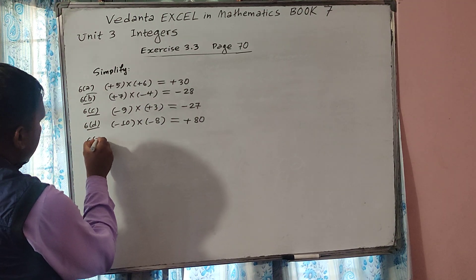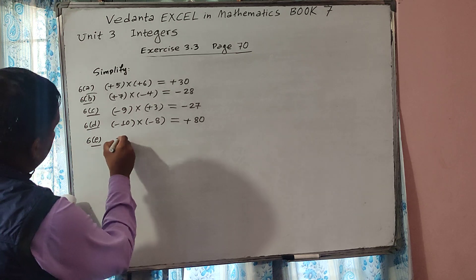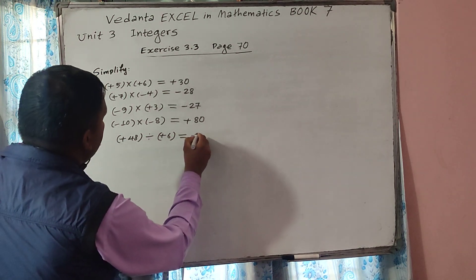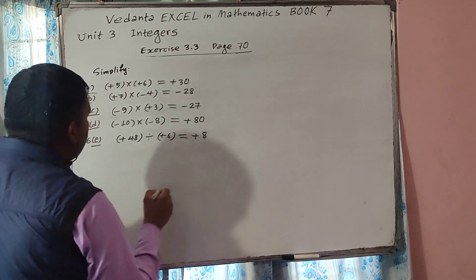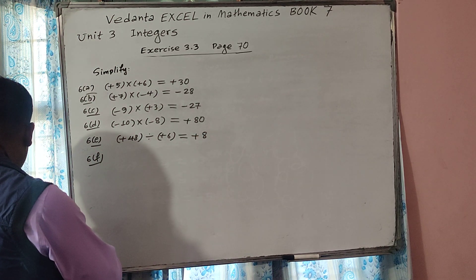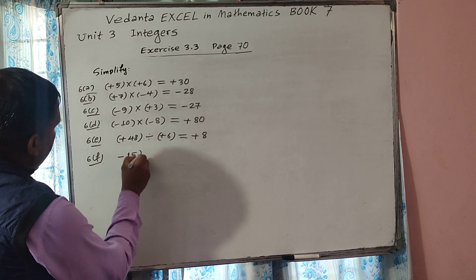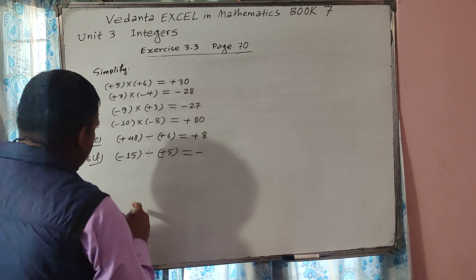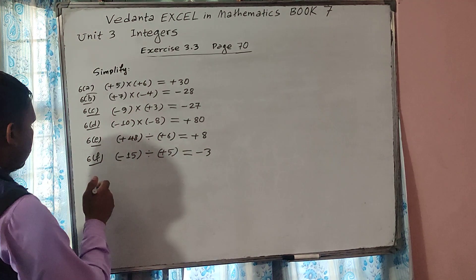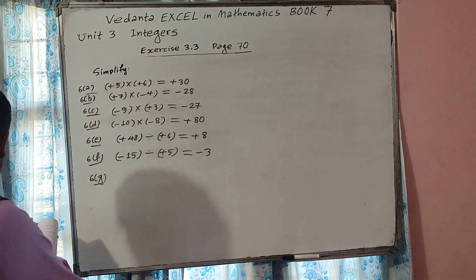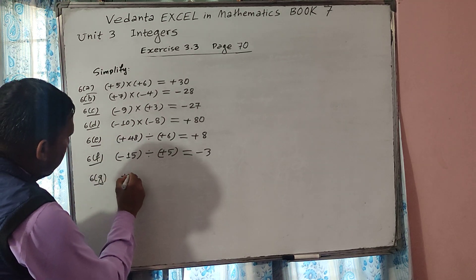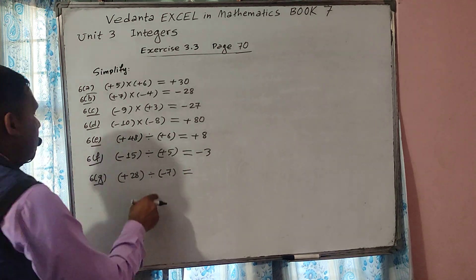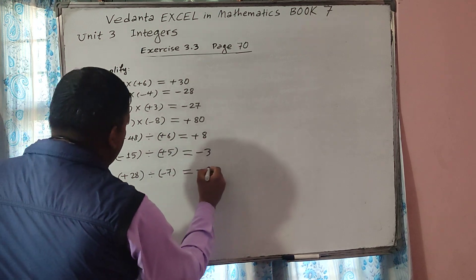Now 6E: plus 48 divided by plus 6. Plus 48 divided by plus 6 — we know plus divided by plus gives plus, and 48 divided by 6 is 8, so plus 8 is the answer. Now 6G: plus 28 divided by minus 7. We know that positive integers divided by negative gives negative — 28 divided by 7 is 4, so minus 4 is the answer.